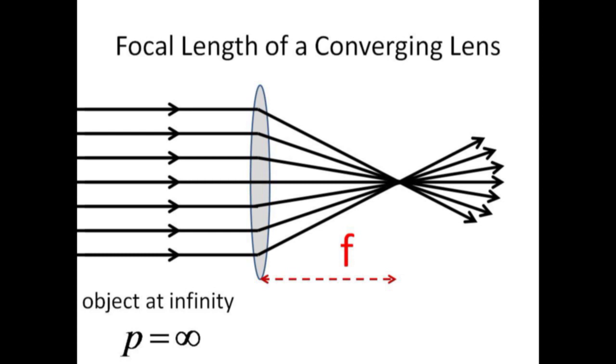If you've ever tried to burn a hole in paper using a converging lens, then you already know how to find the focal length. Rays emitted from a distant object approach the lens in parallel. These rays all converge to form an image at a distance called the focal length.